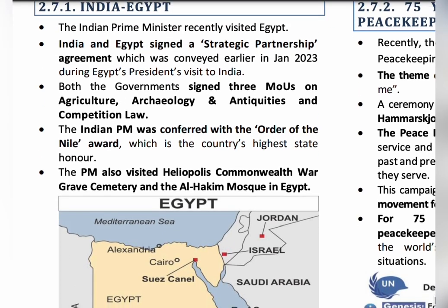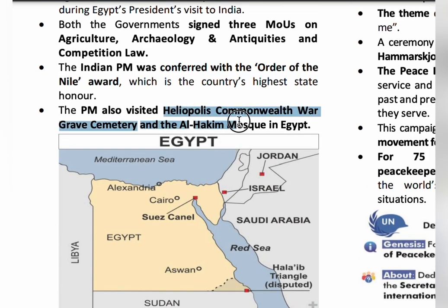The Prime Minister also visited the Heliopolis Commonwealth War Graves Cemetery and the Al-Hakim Mosque in Egypt. The Heliopolis Cemetery is a memorial for British-Indian Army soldiers who died in World War I and World War II — symbolizing the sacrifice of nearly 4,300 Indian soldiers who fought for Egypt, Palestine, and Aden. The Al-Hakim Mosque was renovated and has been maintained since 1970 by the Dawoodi Bohra Muslim sect, who originated in Egypt and settled in India during the 11th century.